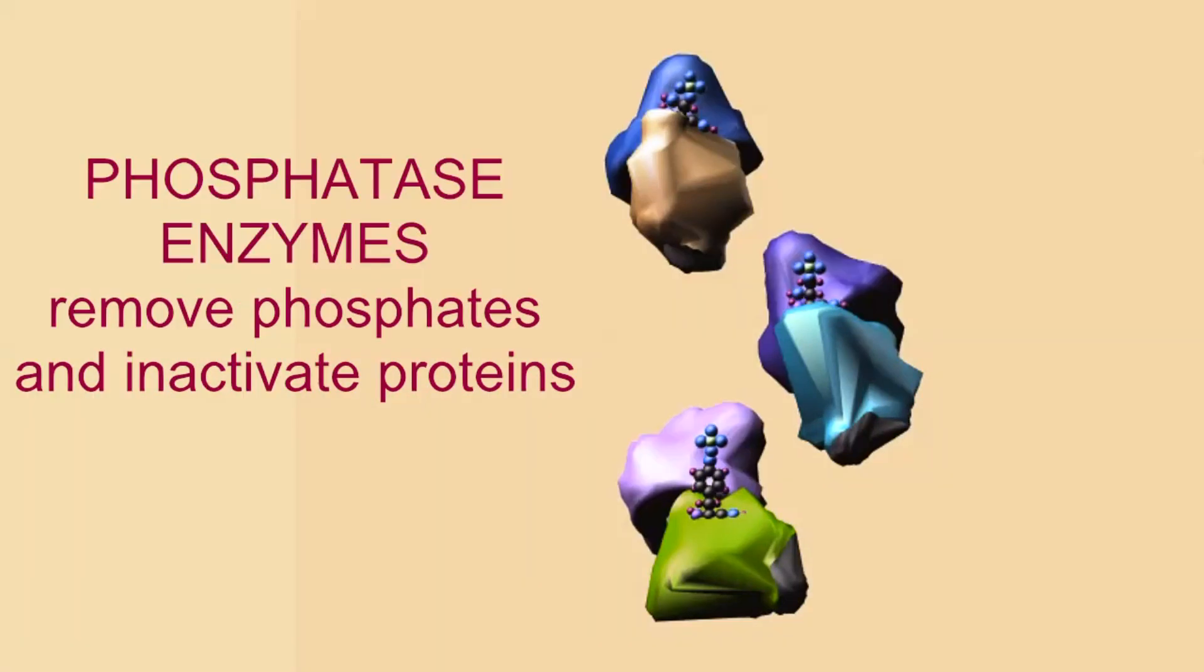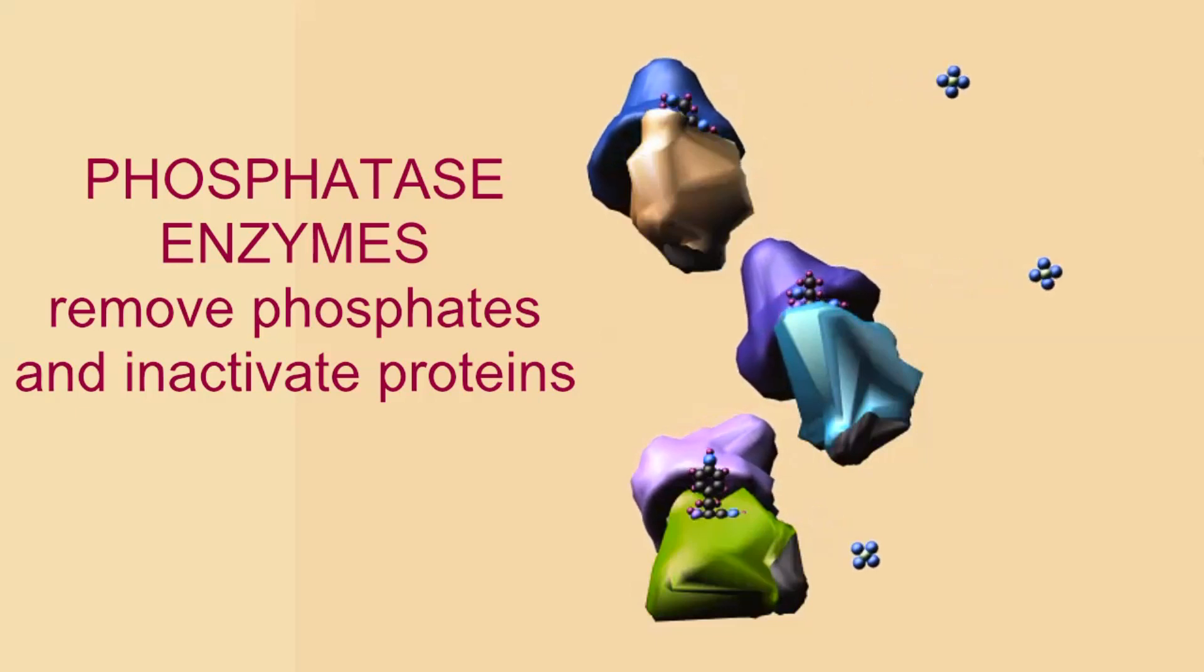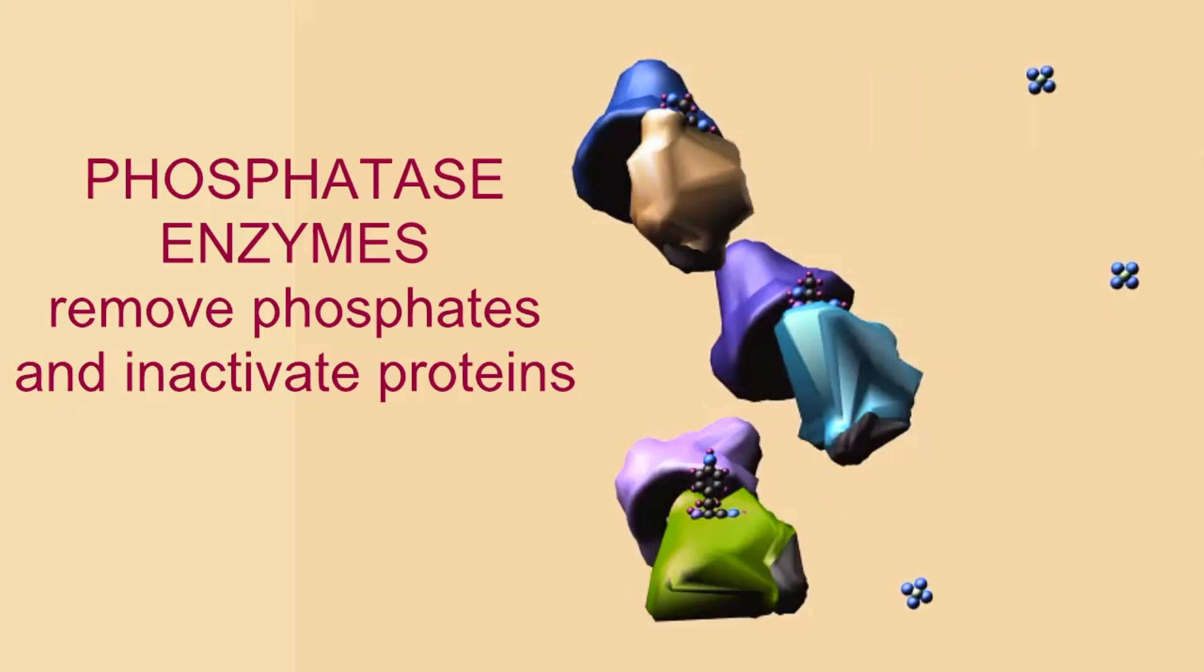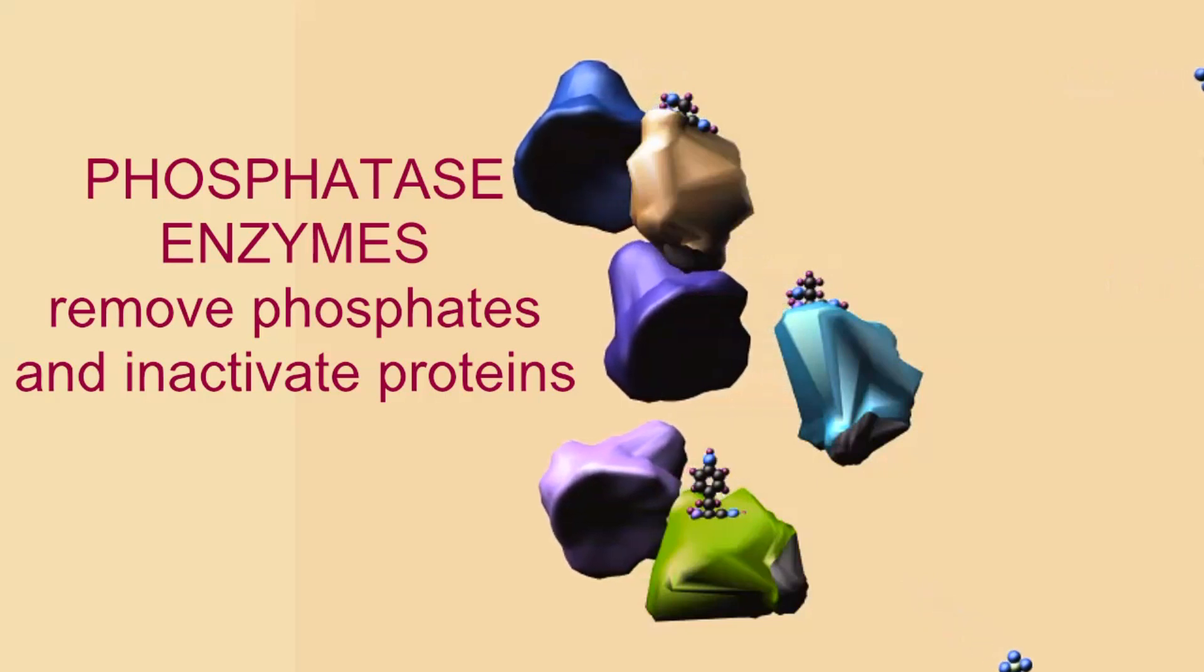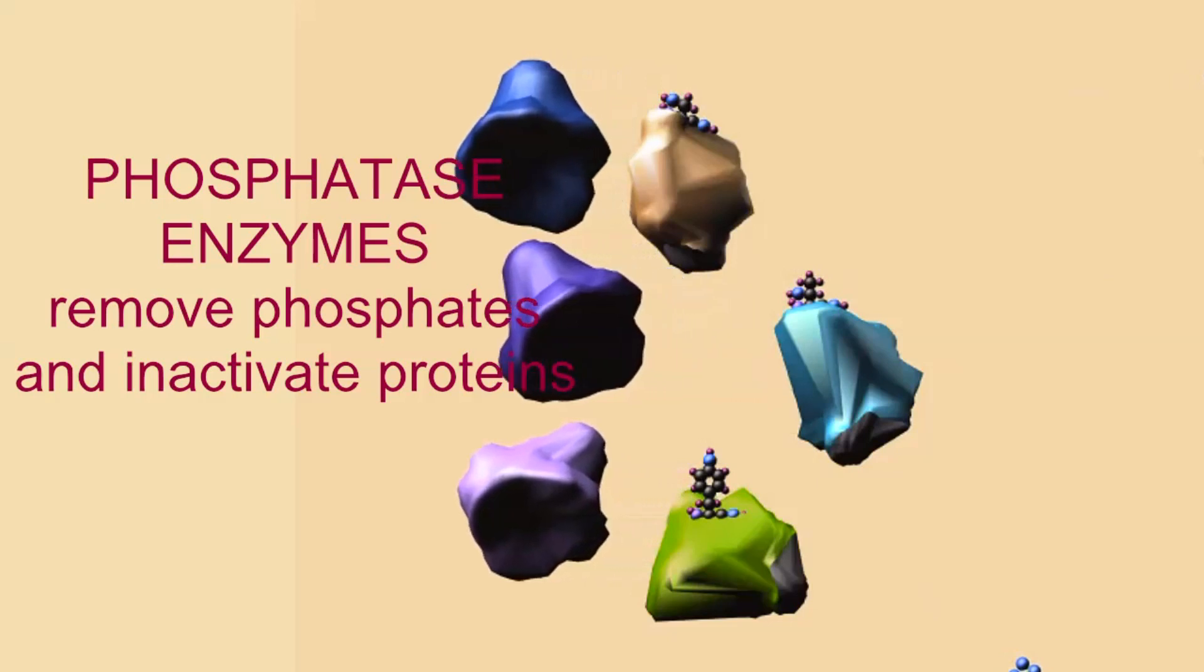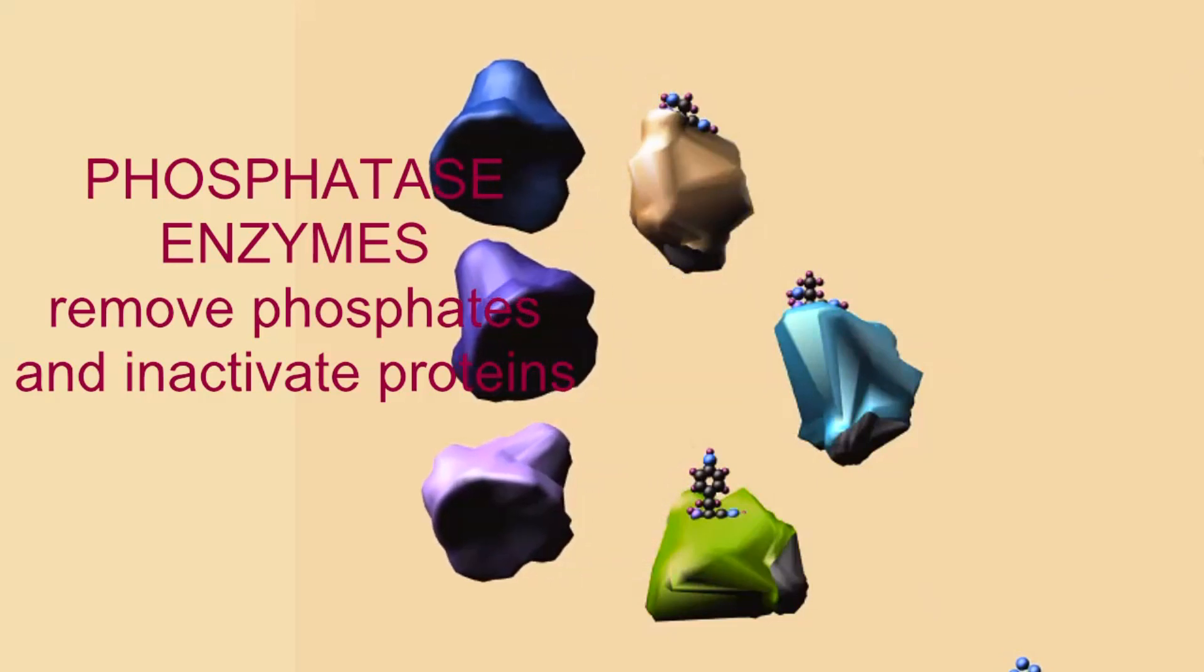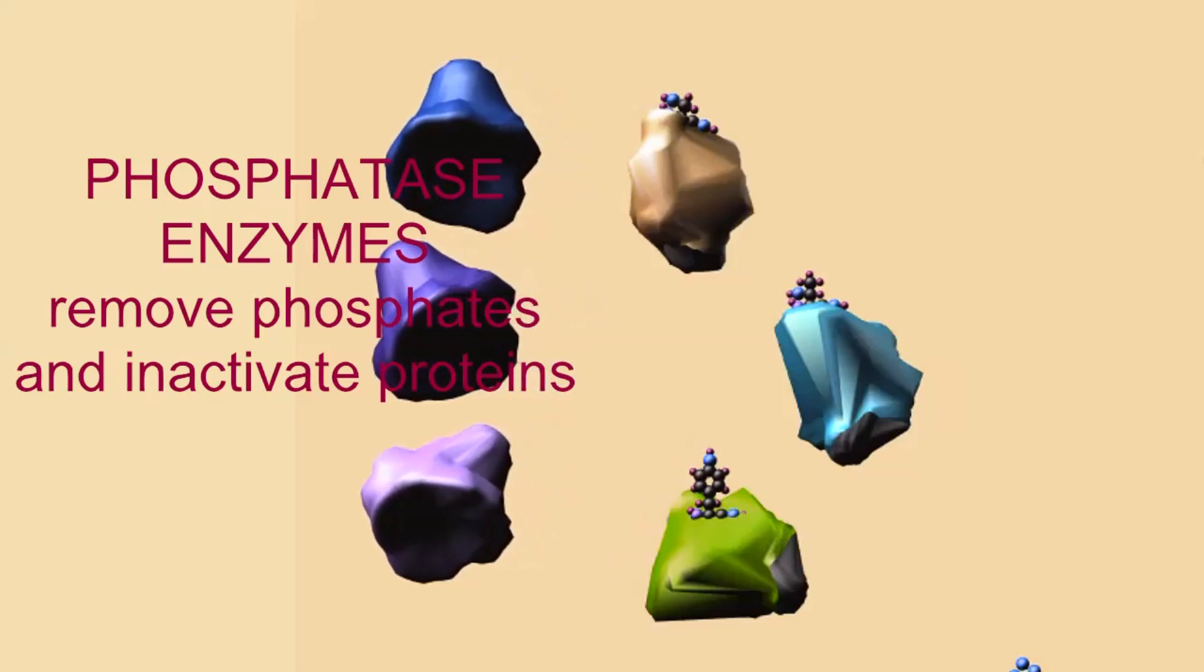Some phosphatases may oppose the MAP kinase enzymes and thus inhibit cell division, some may inactivate the receptor tyrosine kinases which are activated once a receptor on the cell membrane has bound to a stimulus. Other phosphatases are activated by tumor suppressor proteins and thus inhibit cells from advancing in the cell cycle and inhibit cancerous growth.